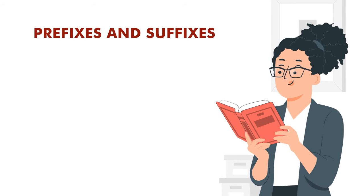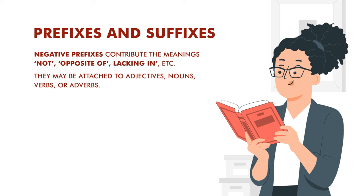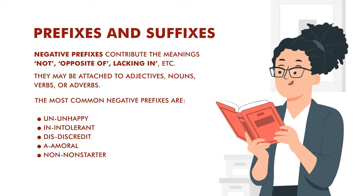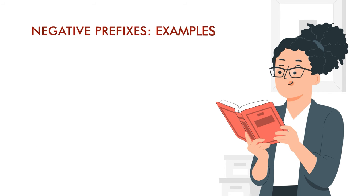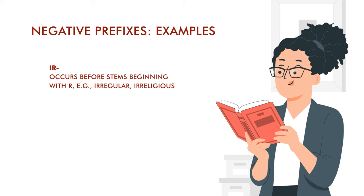Then prefixes and suffixes. You have negative prefixes which contribute the meaning of 'not,' 'opposite of,' or 'lacking in,' and they are attached to adjectives, nouns, verbs, and adverbs. So you will have 'un-' with 'unhappy,' 'in-' with 'intolerant,' 'dis-' with 'discredit,' 'a-' with 'amoral,' 'non-' with 'non-starter.' 'Un-' occurs typically with adjectives and verbs — an 'unkind' person, an 'unending' stream of bad events, 'unexpected.' 'Il-' gives you 'illegal' or 'illegible,' which you cannot read.